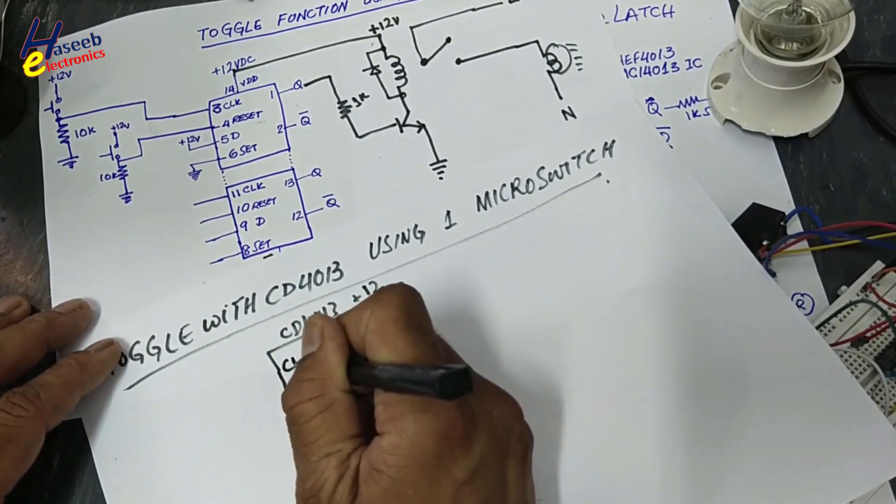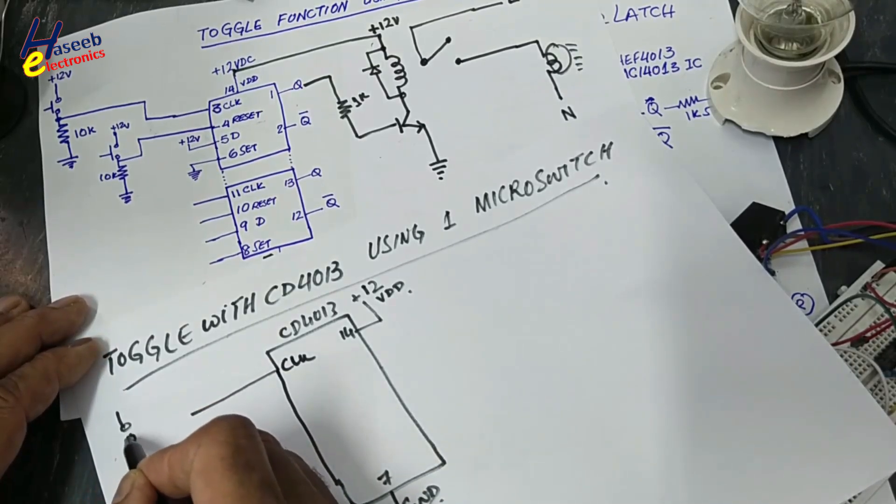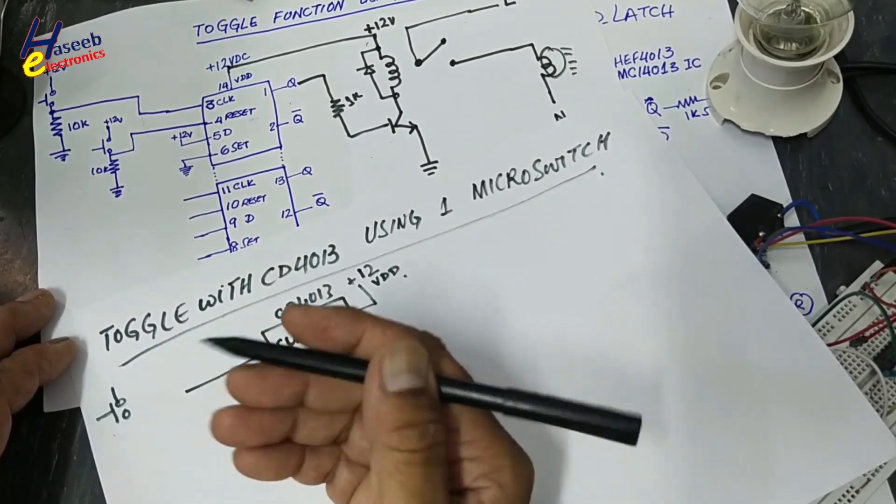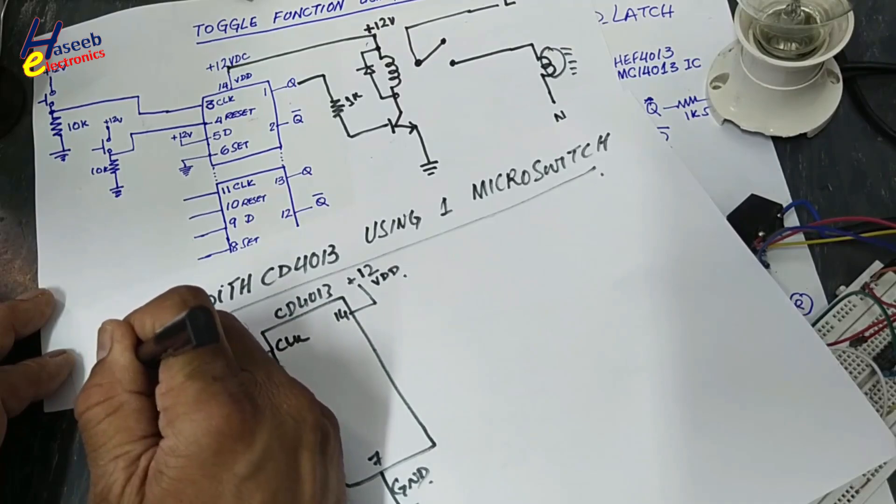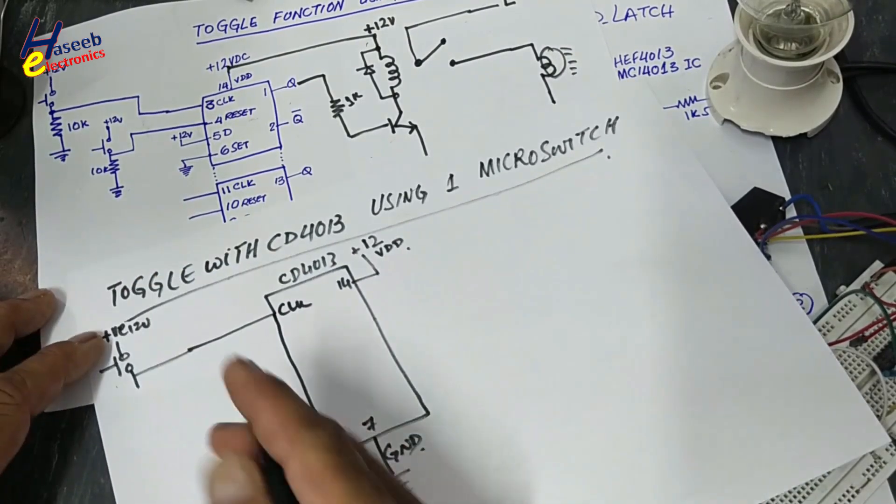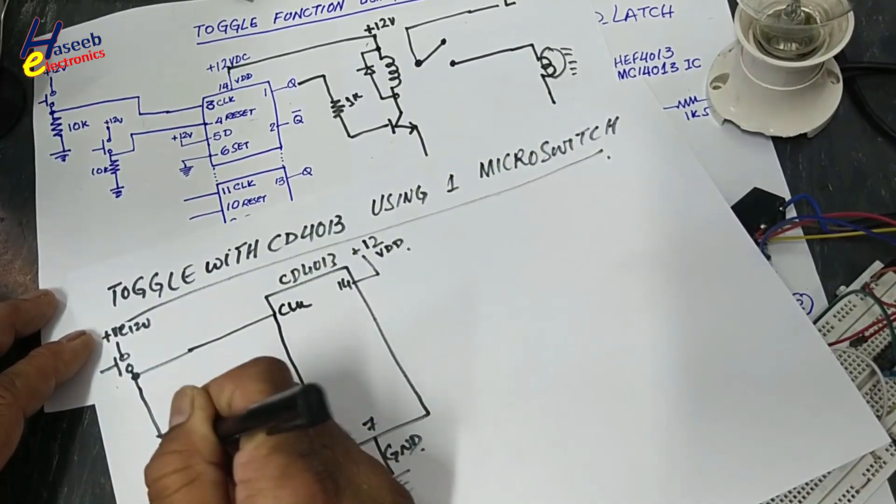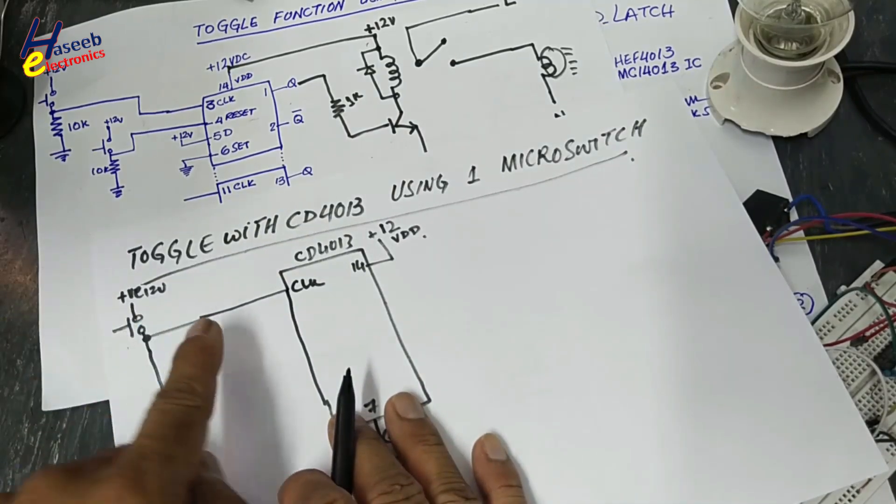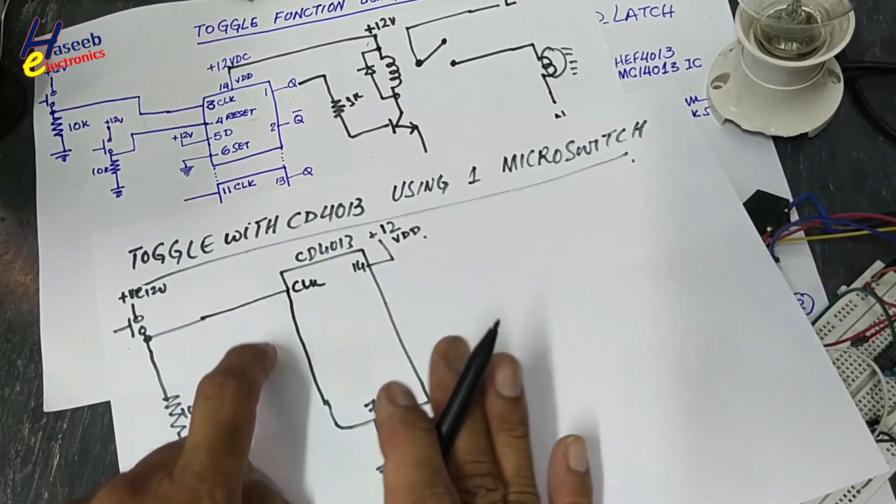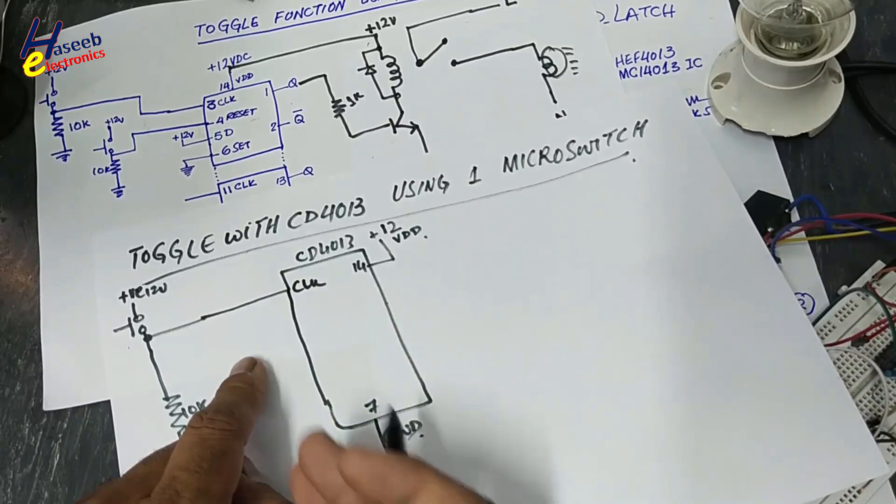Clock input. We will use clock signal. This signal may be from any micro switch, microcontroller, any IC. This end, positive 12V. We will connect pull-down resistor, 10K. When we will press this button, the output will active high. When it is high, any data available at D pin, data pin, that will be transferred at output.